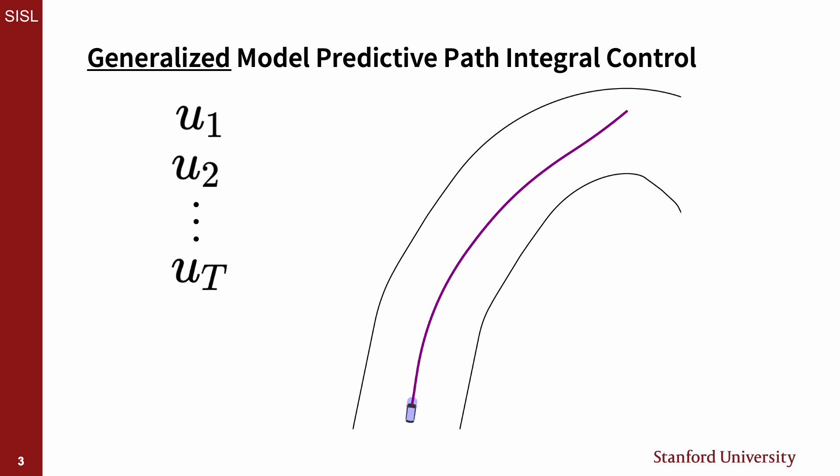Our solution is to treat the sequence of controls as one control input with a combined covariance matrix, and sample from one larger joint distribution.